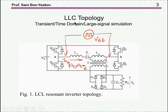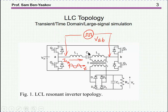What is an LLC converter? It is a resonant converter based on a switcher — could be a full-bridge as shown here, or half-bridge — which generates a square wave. This is fed to a resonant circuit composed of two inductors plus a capacitor, L1 and L2, a transformer in parallel to one of the inductors, and then a rectifier — could be a full-wave rectifier as shown here, or half-wave — and then a filter capacitor and a resistor, which represents the load.